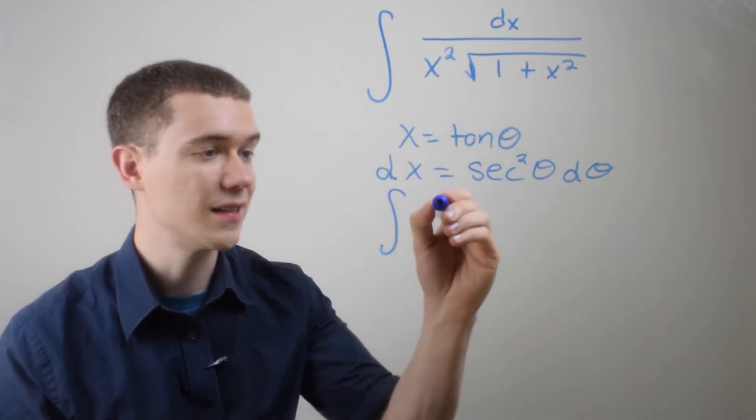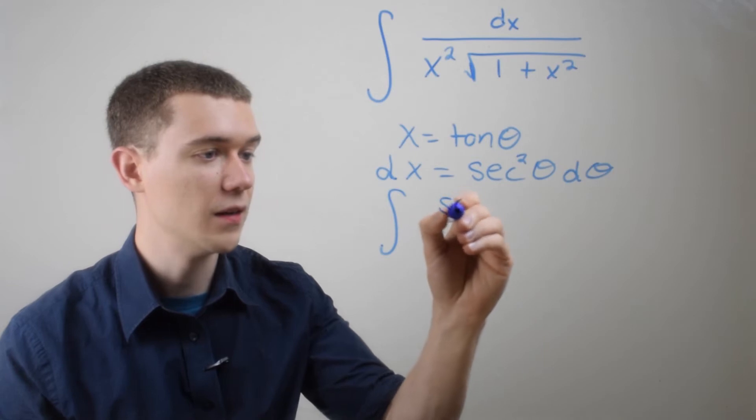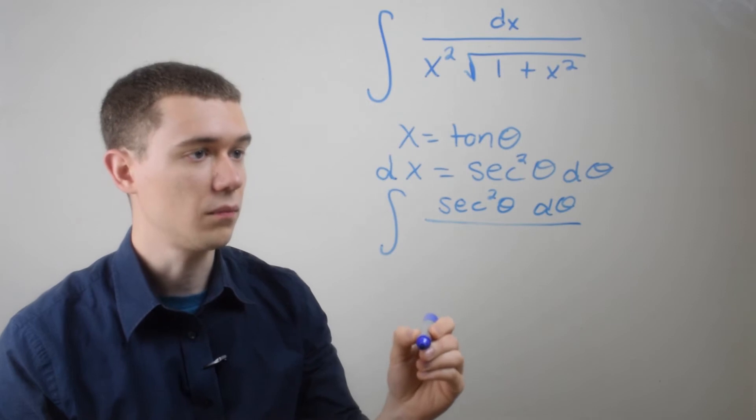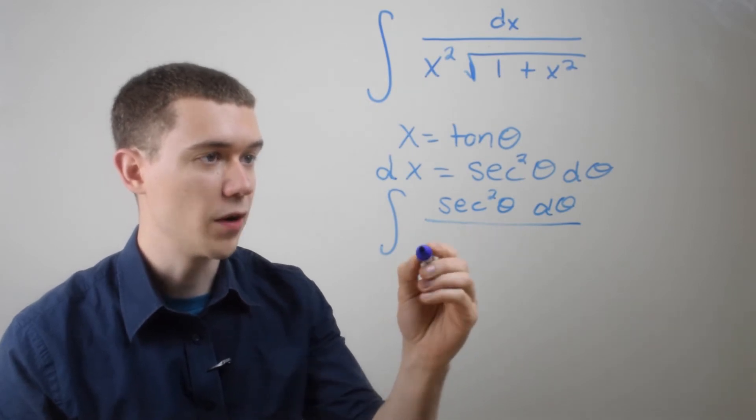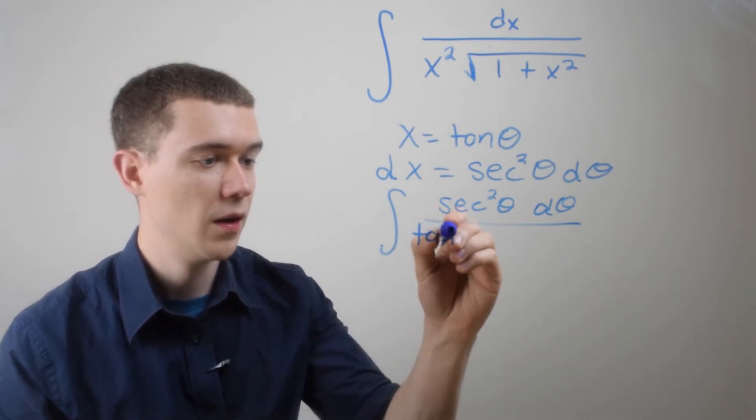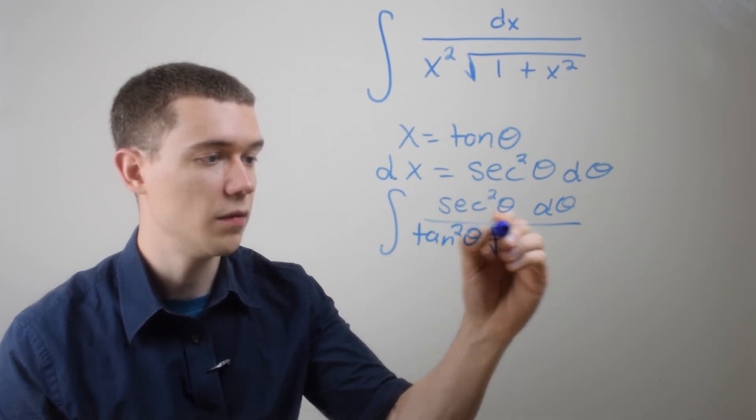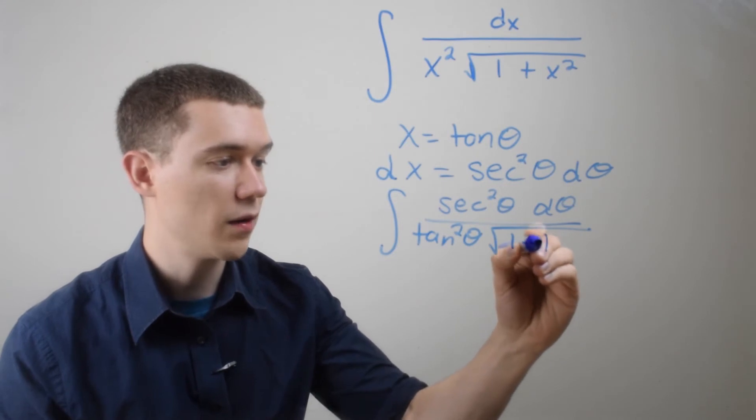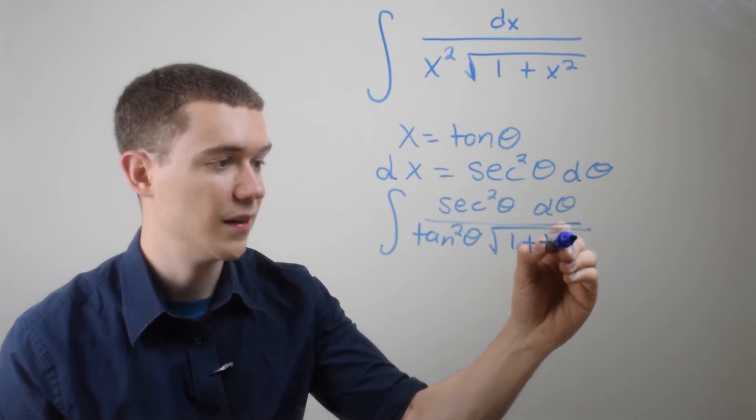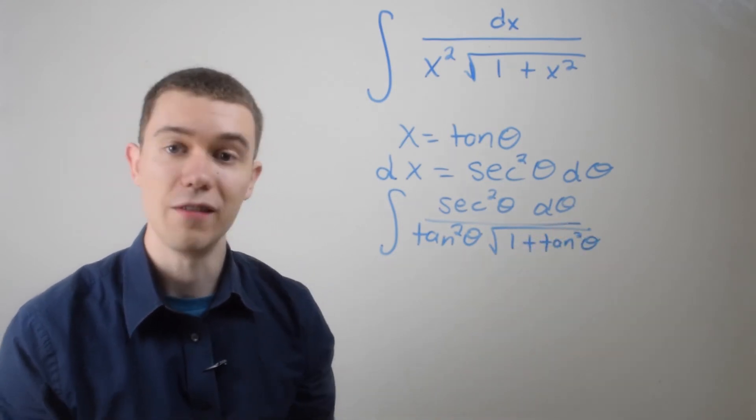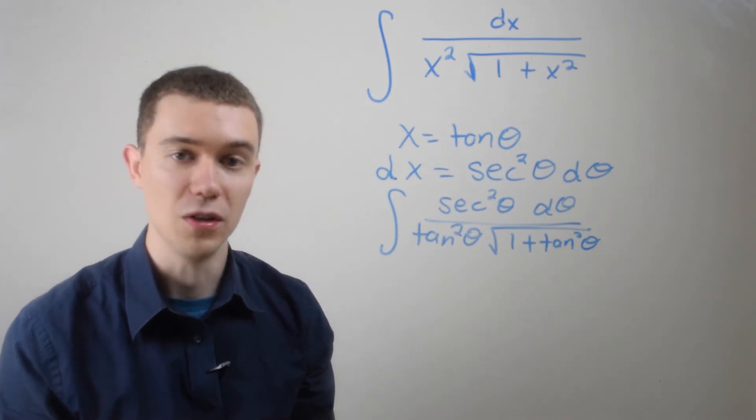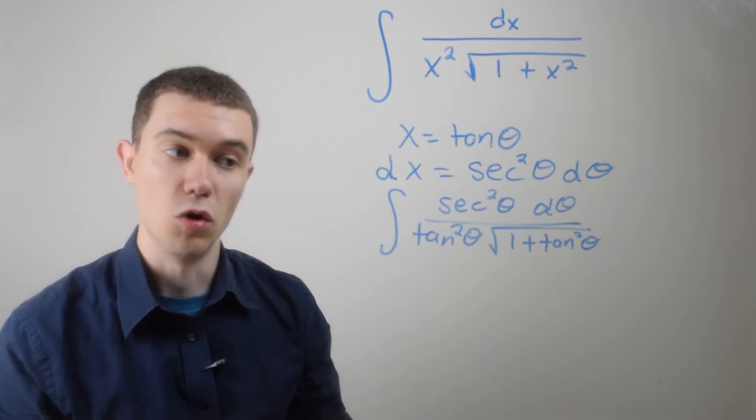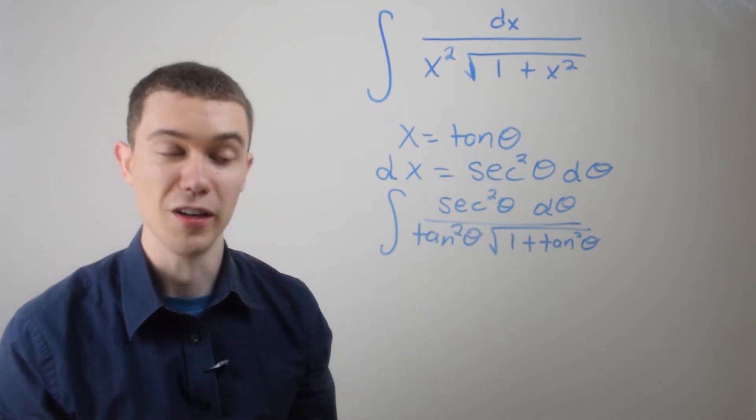So I know that dx on top there is supposed to be secant squared theta d theta. I've got an x squared right here. Well, that'll be a tangent squared then, right, because I let x be tangent. And then I've got the square root of 1 plus x squared. Well, I called x tangent again. Okay, I've made my trigonometric substitution. At this point, it's just simplification to get to a place where I can actually solve this integral using techniques I already know.